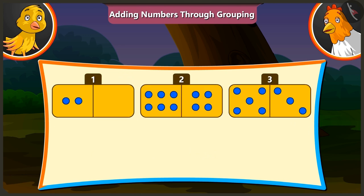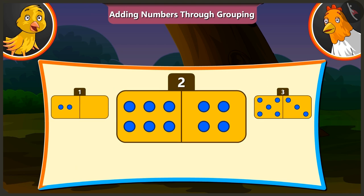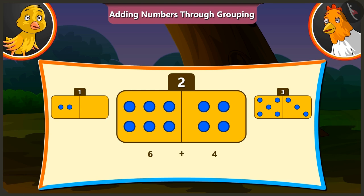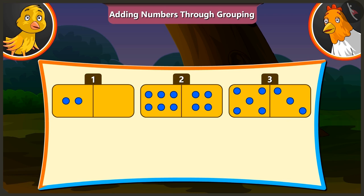Now tell me the number of holes on the second card. The second card has 6 and 4 holes. If we add 4 to 6, we get 10 holes. Wow, Pilu!